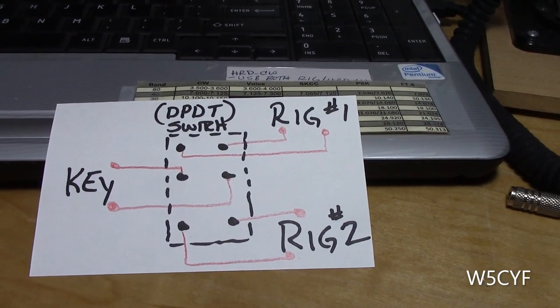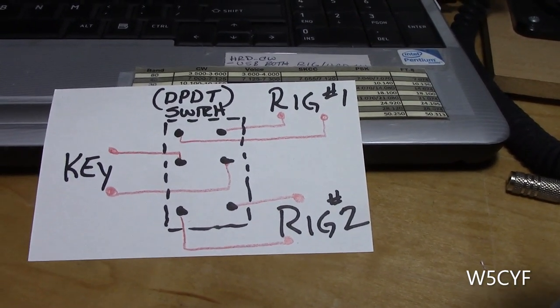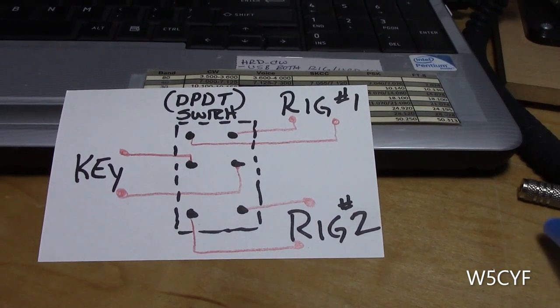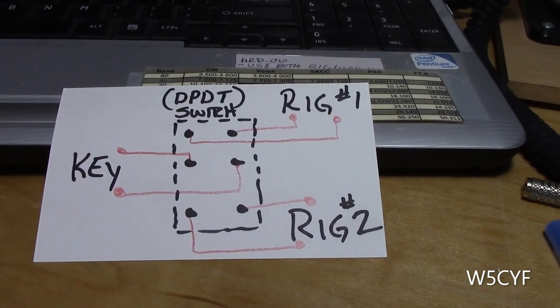Once again it's a double pole, double throw switch and down below in the description I've got an Amazon link to where you can order a typical switch like this if you don't already have one.